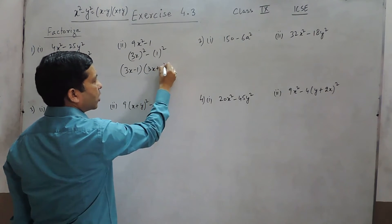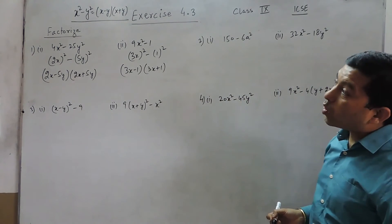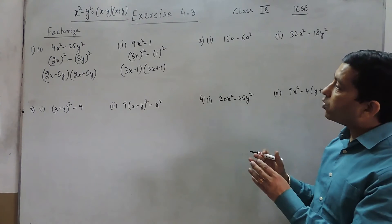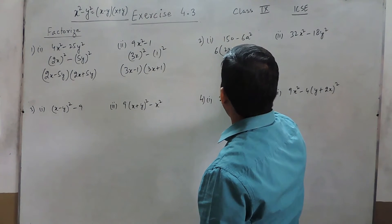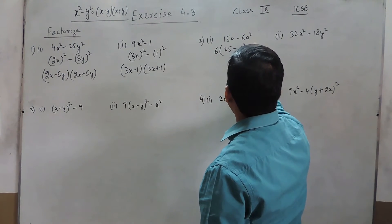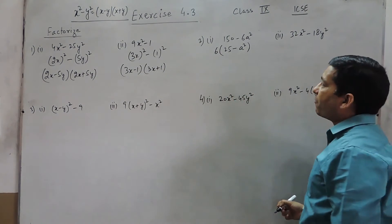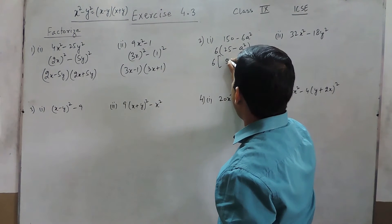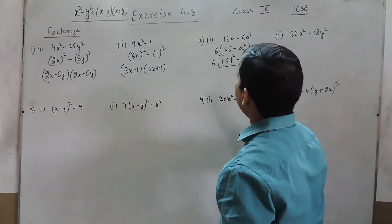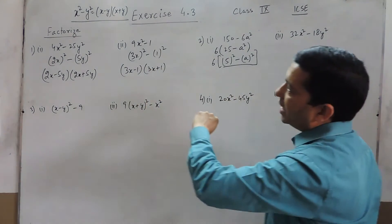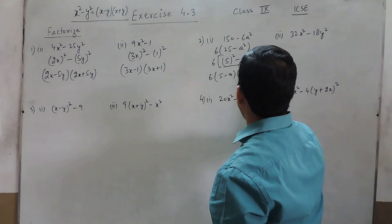In this case 150 and 6a square are not perfect squares, so first of all we have to see which term we can take as common. Here we can take 6 as common. It becomes 6 times 25 minus a square. Now we know that 25 and a square are both perfect squares — 5 square and a square. Since there is a negative sign in between, this can be written as 5 minus a and 5 plus a.